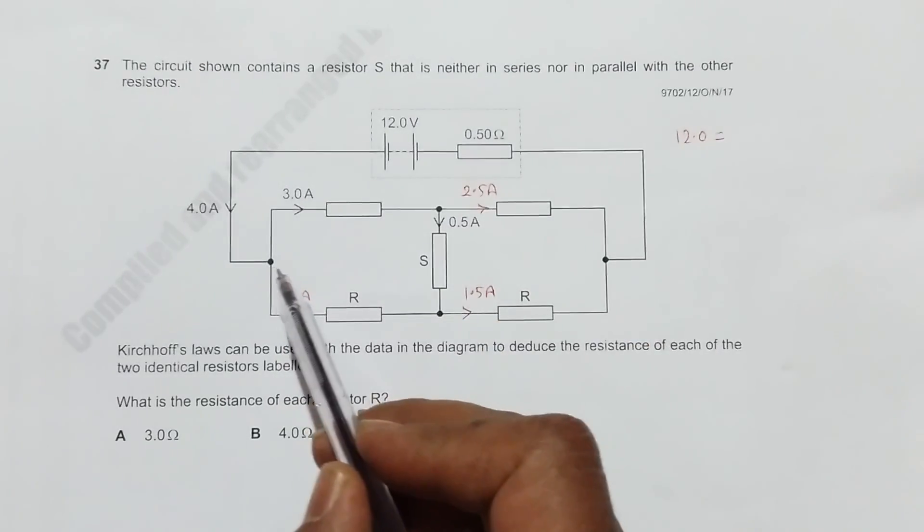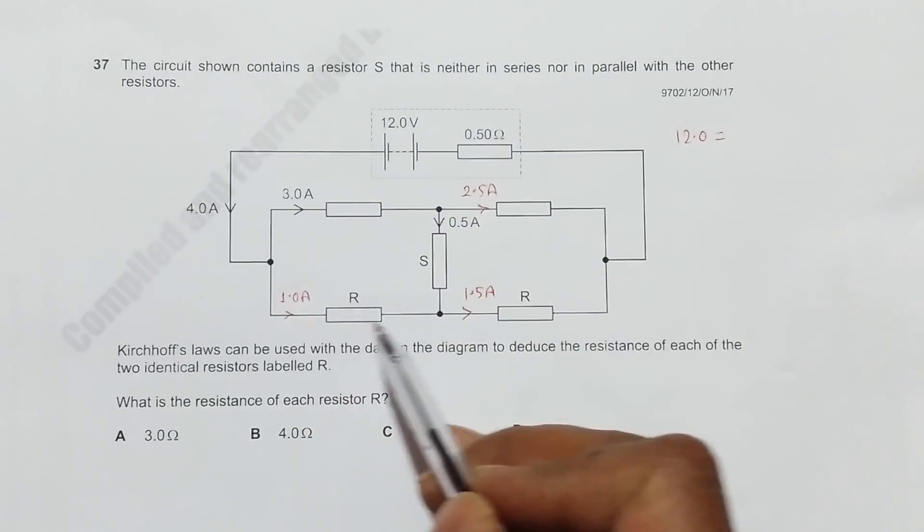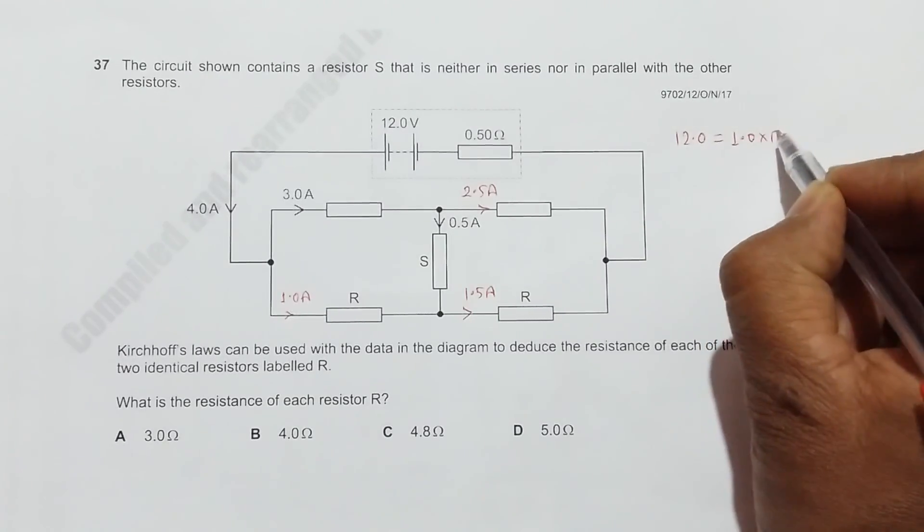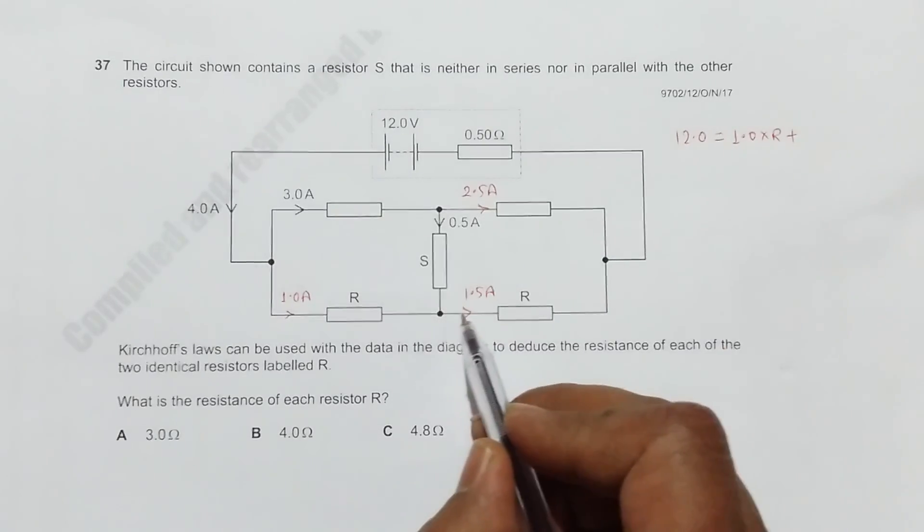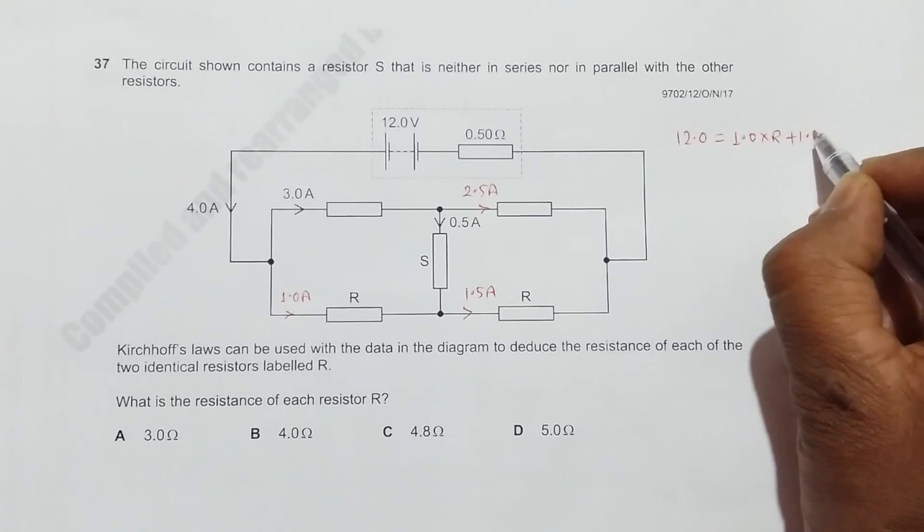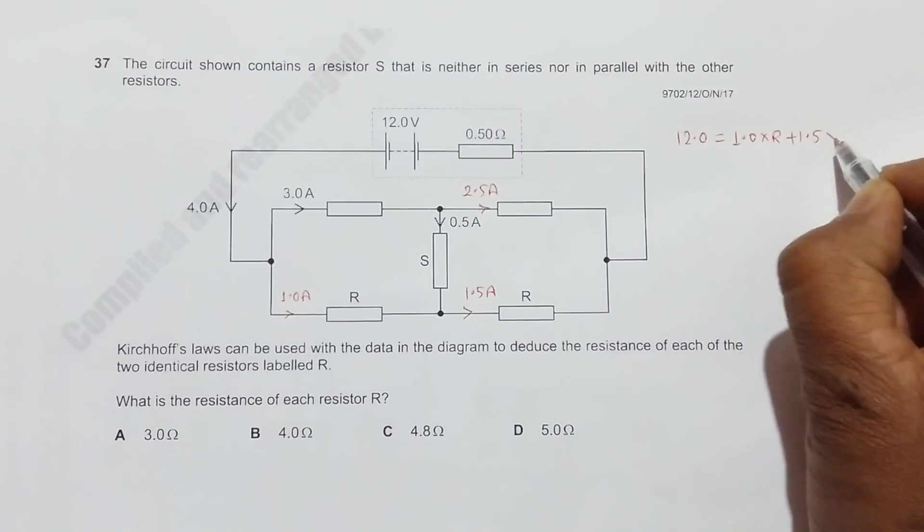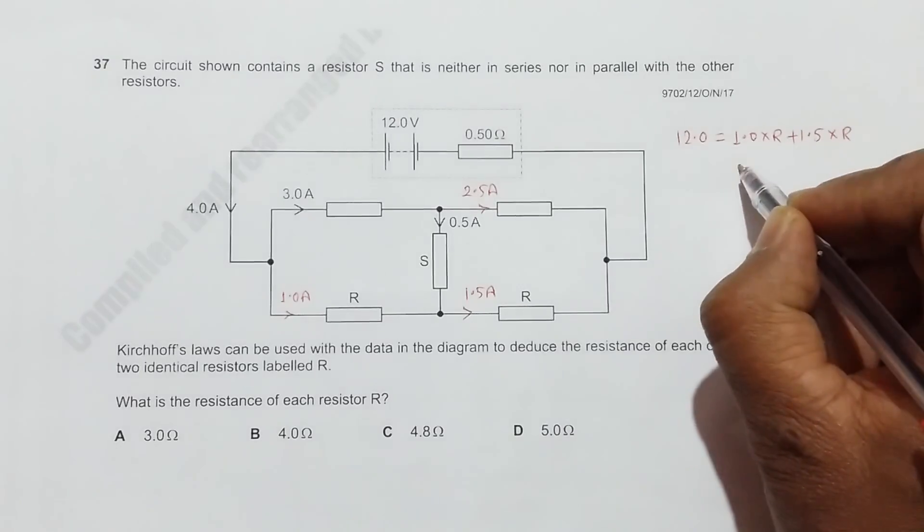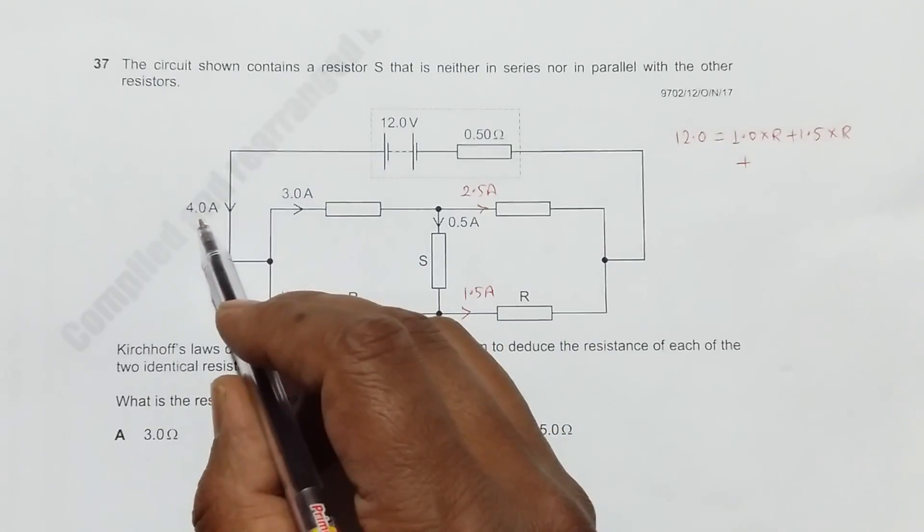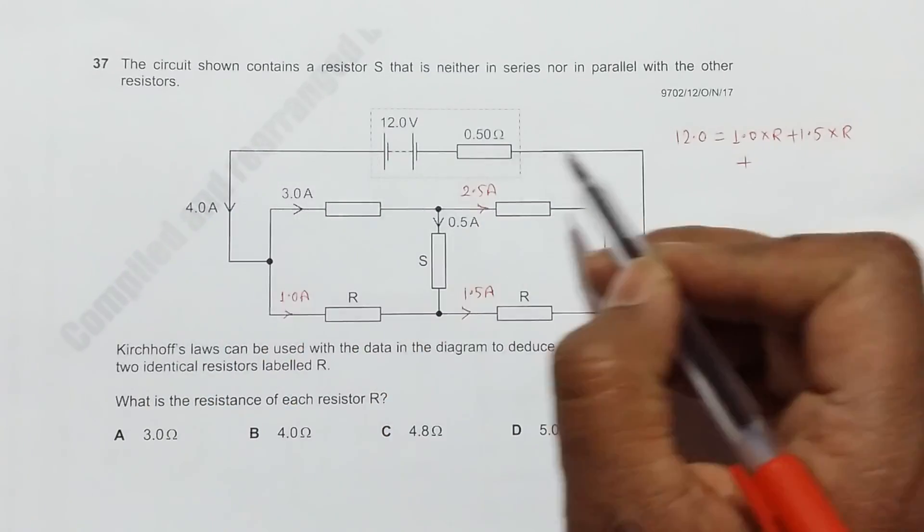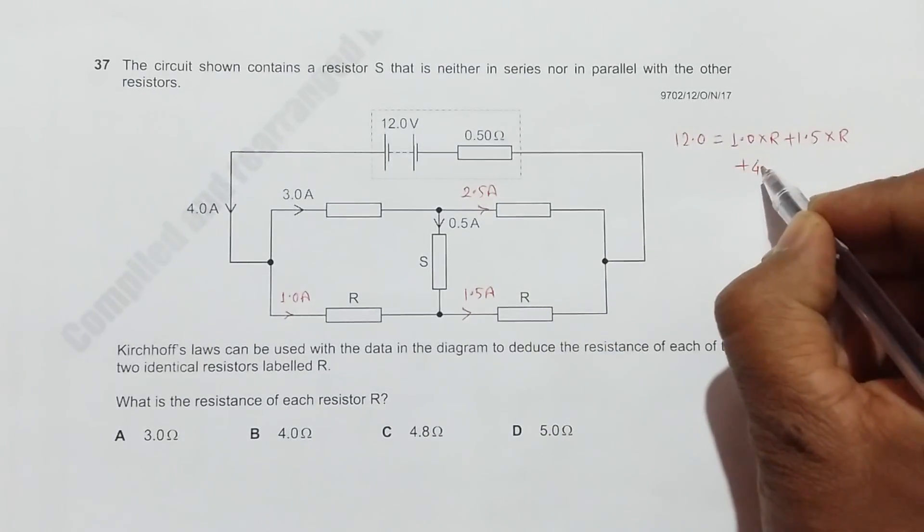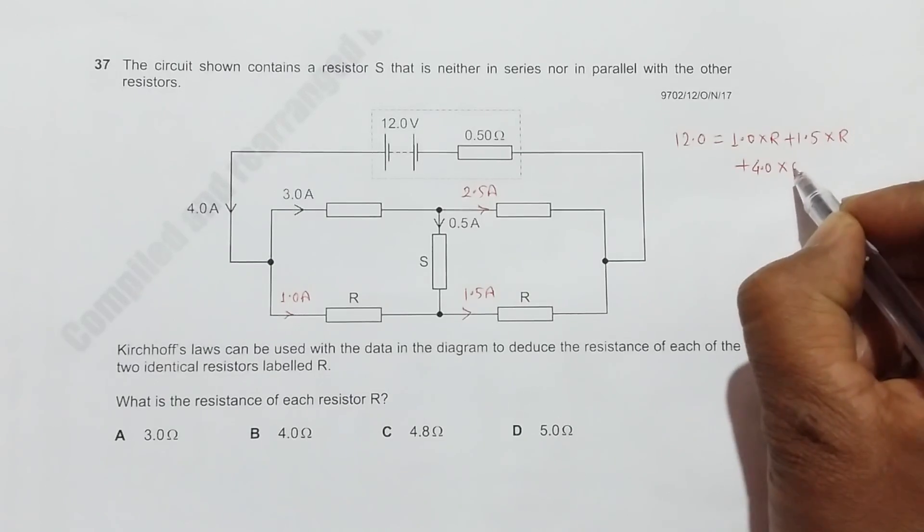The current here is 1 ampere, so it is 1.0 times R, plus the current here is 1.5 amperes, so it is 1.5 times R. Plus, along this path the current is 4 amperes, so it is 4.0 times 0.50 ohms.